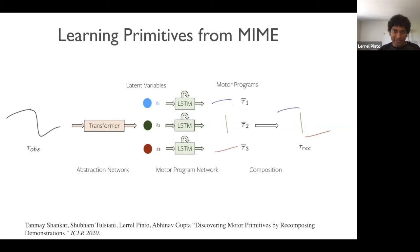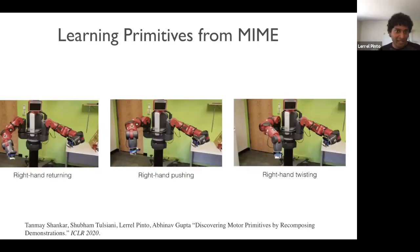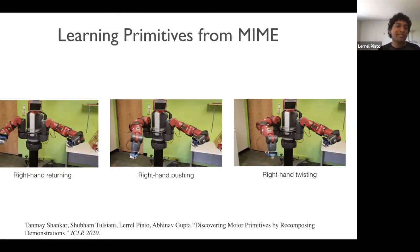Now, after we train this on our MIME dataset, we find some very interesting motor primitives. So for instance, on the left over here, you can see a returning primitive, where usually after solving a task, the arm has to retract back. In the middle, you see a pushing primitive, where the arm moves linearly forward. And on the right, you see a twisting primitive, which is often used when you're pouring something.